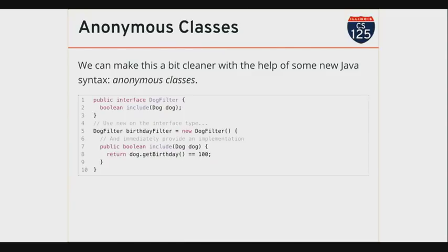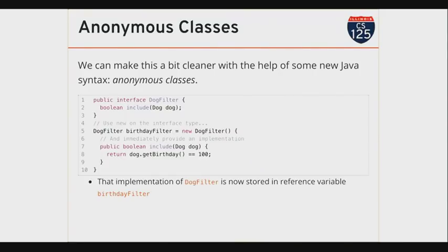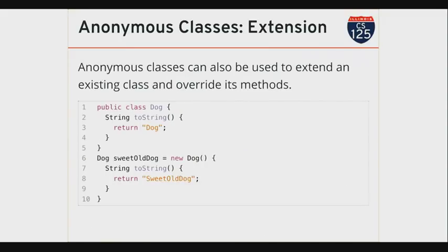It turns out I can make this a little bit nicer by exploiting a couple of new features of Java we haven't talked about yet. The first one is something called anonymous classes. In Java, if I want to create a new class that implements an interface, and if that class doesn't need a name because it's only going to be used once, I can do this. I use 'new DogFilter' as the name of the interface, and then immediately following in braces, I provide an implementation of the one method I needed to implement. We call these classes anonymous because they have no name. This creates a filter that returns true if the dog's birthday is 100, but this class has no name — there's no name for it anywhere. If I wanted to create another instance of this class somewhere else in my code, I couldn't — I'd have to use this syntax again. You may have seen this when doing Android programming, and it's used throughout Android pretty heavily.